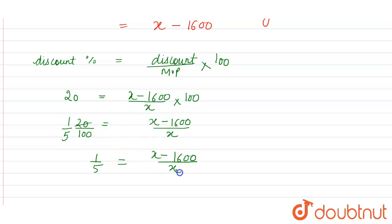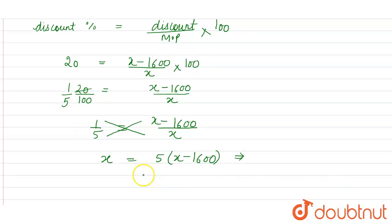So 1 by 5 is equal to x minus 1600 divided by x. Now we'll cross multiply. So x into 1 is x. 5 multiply x minus 1600. This is equal to x is equal to 5 into x, 5 into x is 5x minus 1600 into 5.